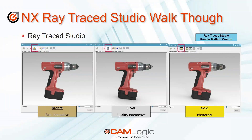Let's jump back into our presentation. We've seen we have our bronze, silver, and gold tiers. These images really don't do it justice, but you can see a difference between the lighting, the shading, and the transparencies between each image.